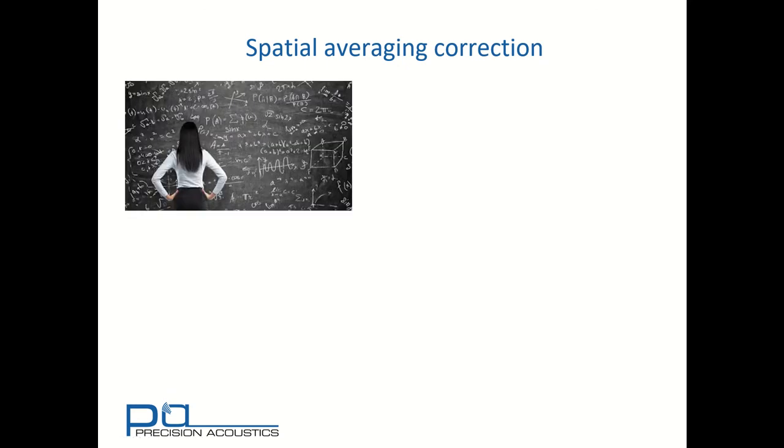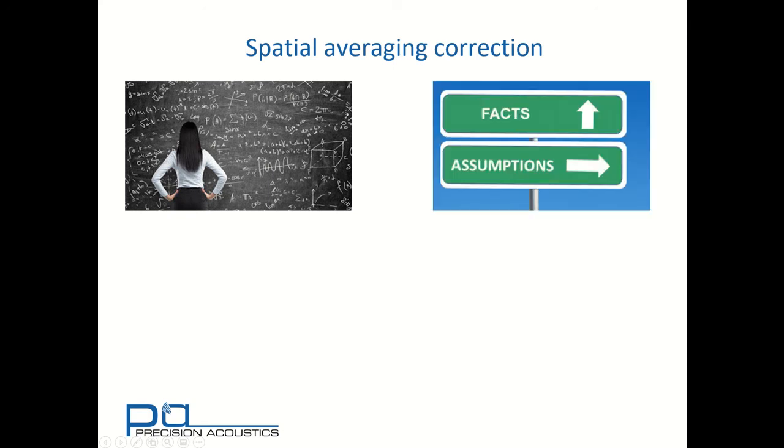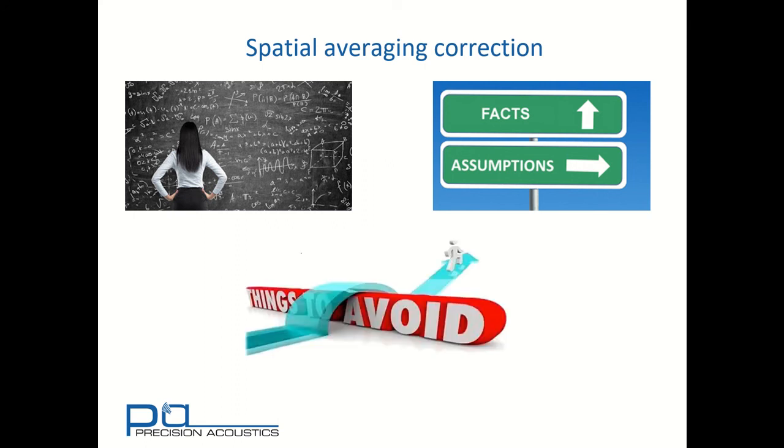There are some mathematical spatial averaging corrections but it's important to realise that they're mathematically complex and they also rely upon assumptions about the geometry of both source transducer and receiving hydrophone. And sometimes the experimental facts and these assumptions are inconsistent. Therefore as a general policy spatial averaging is something that should best be avoided. Where possible don't try to correct for it but make a measurement with the smallest hydrophone you can to minimise spatial averaging artefacts.